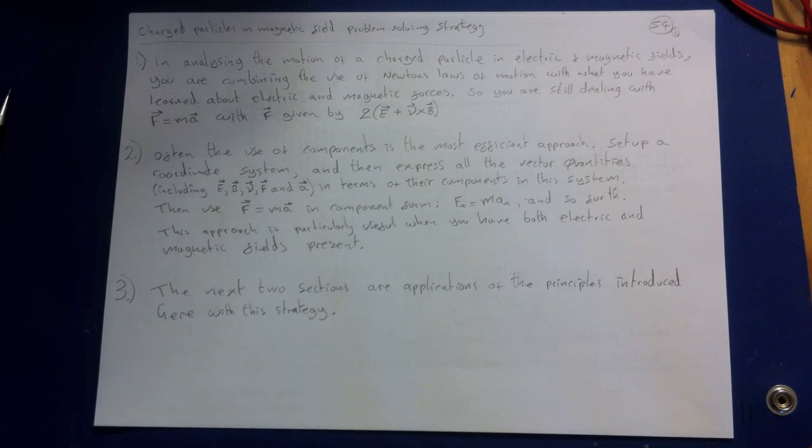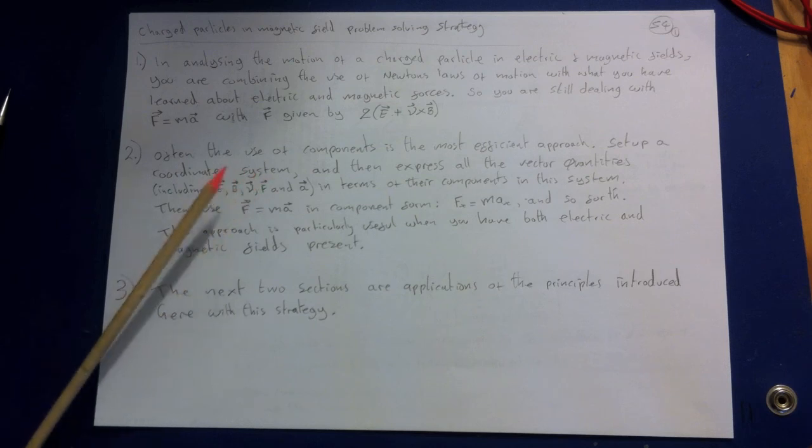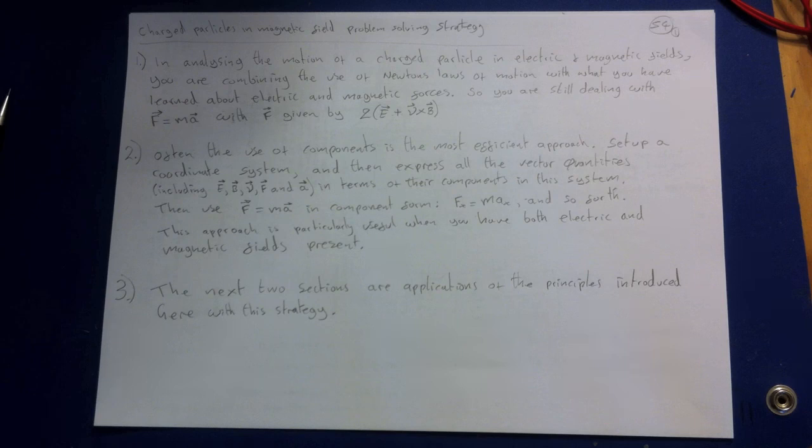the velocity vector, the force vector and the acceleration vector in terms of their components in this system. So you're going to have I's, J's and K's for all of these and turn them all into vectors. This approach is particularly useful when you have both electric and magnetic fields present.